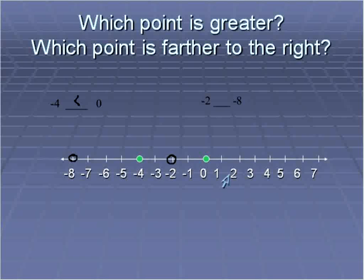Well, if we write it out on the number line and we look which point is farther to the right, negative 2. Negative 2 is farther to the right. Therefore, negative 2 is greater than negative 8. So that means that we would put our symbol like this: negative 2 is greater than negative 8.